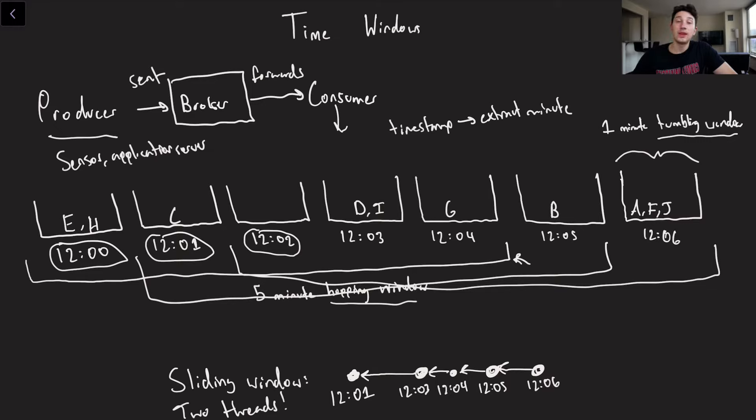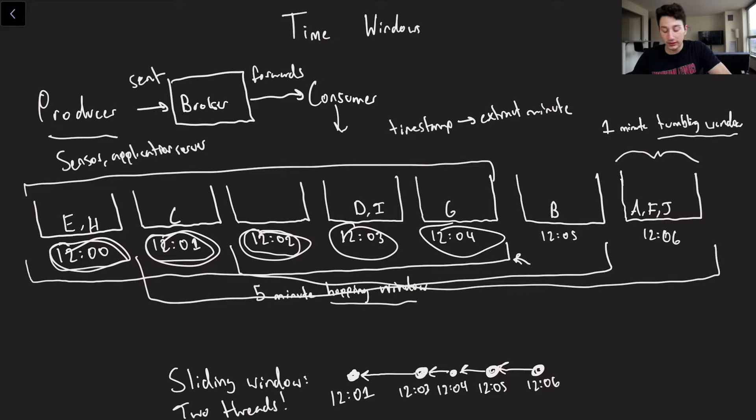every single five minute hopping window is composed of five non-overlapping tumbling windows. So we can effectively do the same thing we did before, group all of our messages into tumbling windows. And then when we need a given five minute hopping window, we can just aggregate the five tumbling windows that make them up. So in the case of 12 o'clock to 12.04, this guy over here, we're taking the 12 o'clock, we're taking the 12.01, we're taking the 12.02, the 12.03, and the 12.04. And so we would have events E, H, C, D, I, and G.